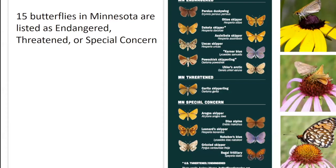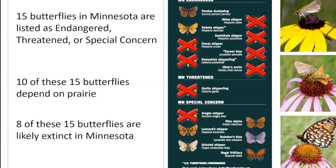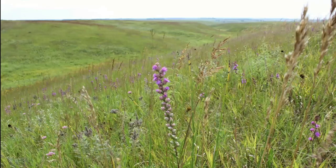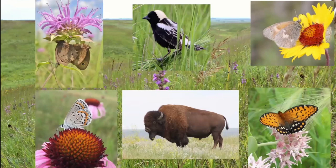This collapse happened hard and fast, making the Poweshiek skipperling way more endangered than a giant panda. There are about 6,000 giant pandas in the wild, but maybe only 500 Poweshiek skipperlings — actually worse than pandas, on about the same level that bison were over 100 years ago when only a couple hundred individuals remained. Unfortunately there are actually 15 butterflies listed as endangered, threatened, or of special concern at the Minnesota state level — 10 are prairie dependent and 8 are probably already gone.